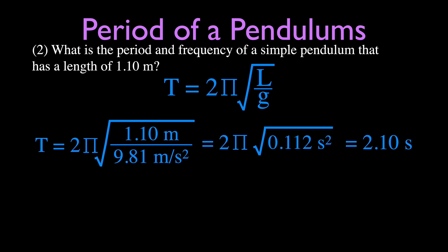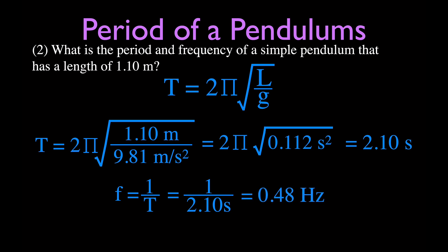It takes 2.10 seconds for that pendulum to swing out and back. For the frequency, since we don't know the number of cycles, we use frequency equals 1 over the period: 1 divided by 2.10 gives about 0.48 hertz — roughly half a cycle per second. That makes sense: if it takes about 2 seconds to complete one full cycle, it completes half a cycle in one second.